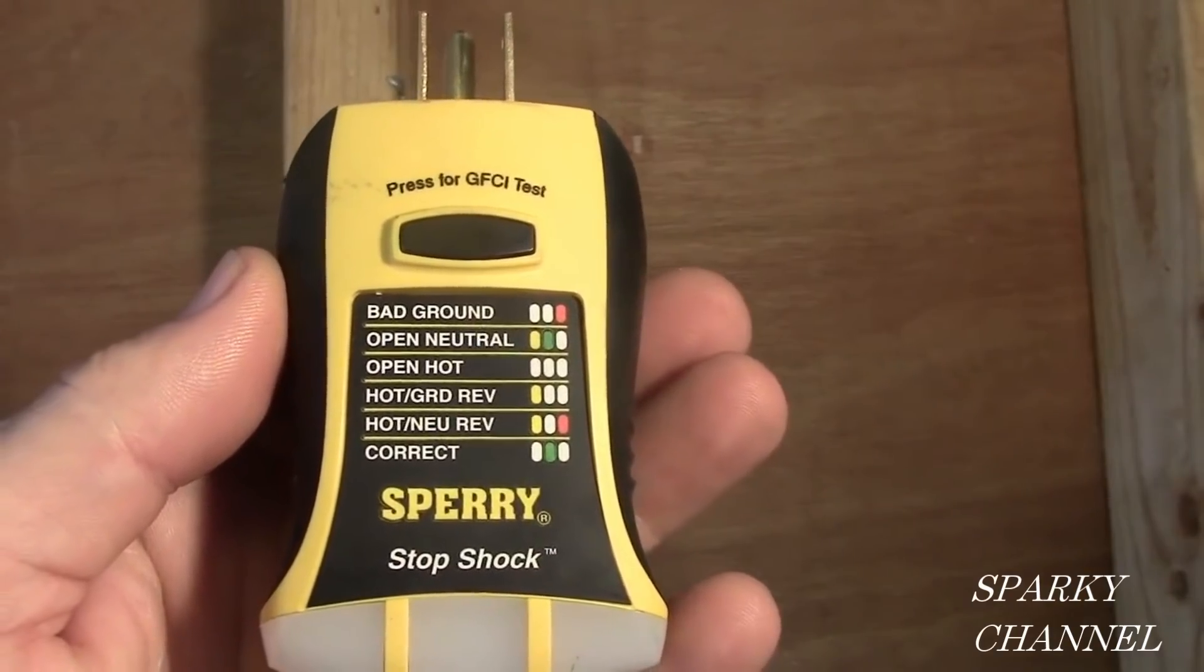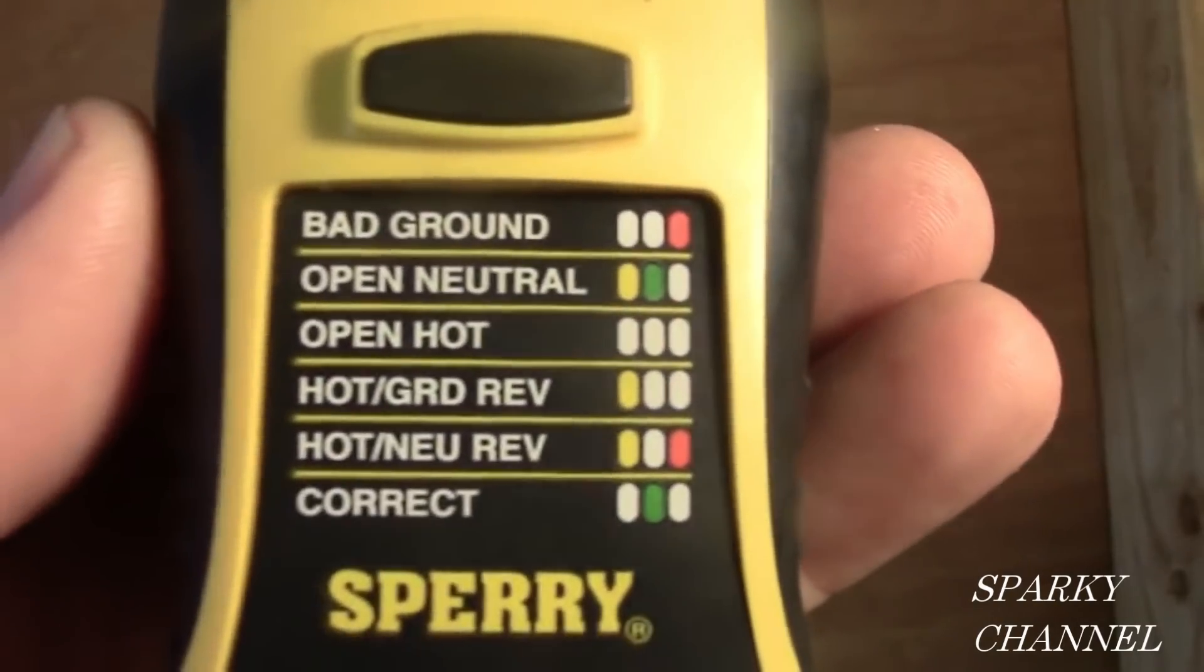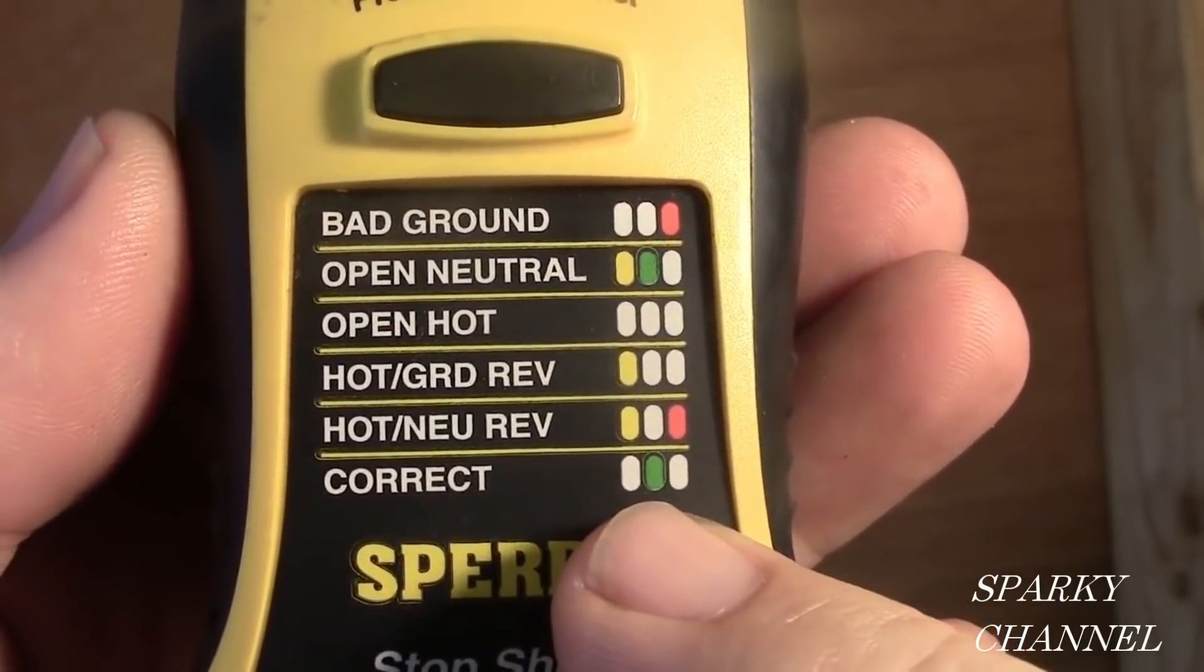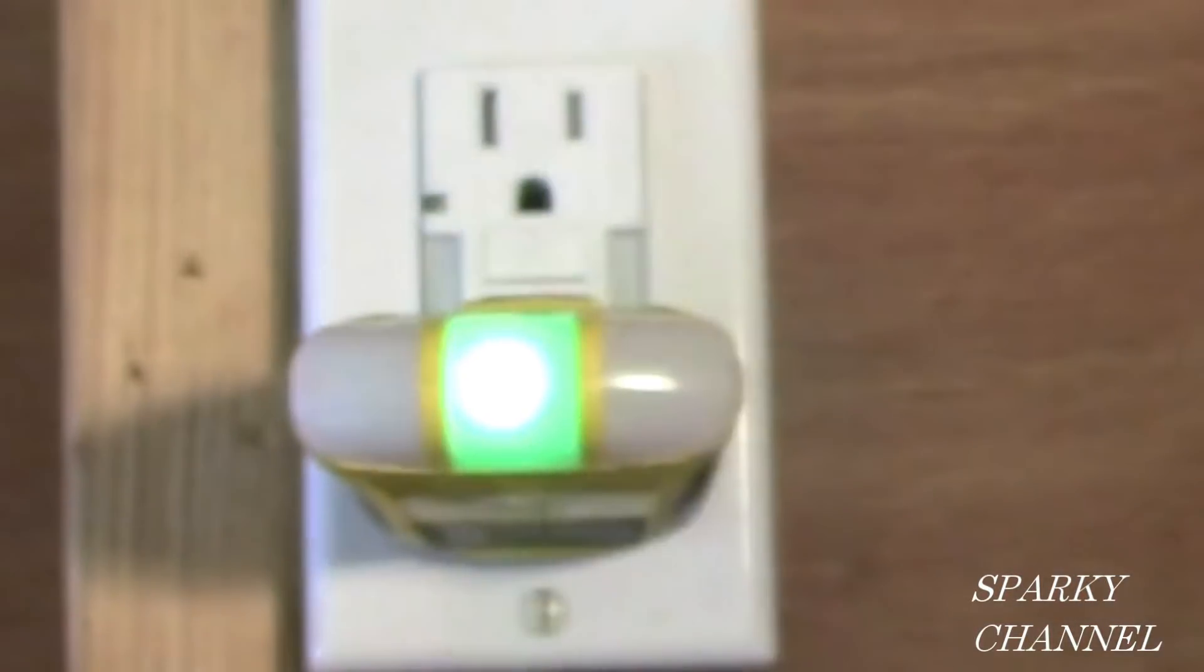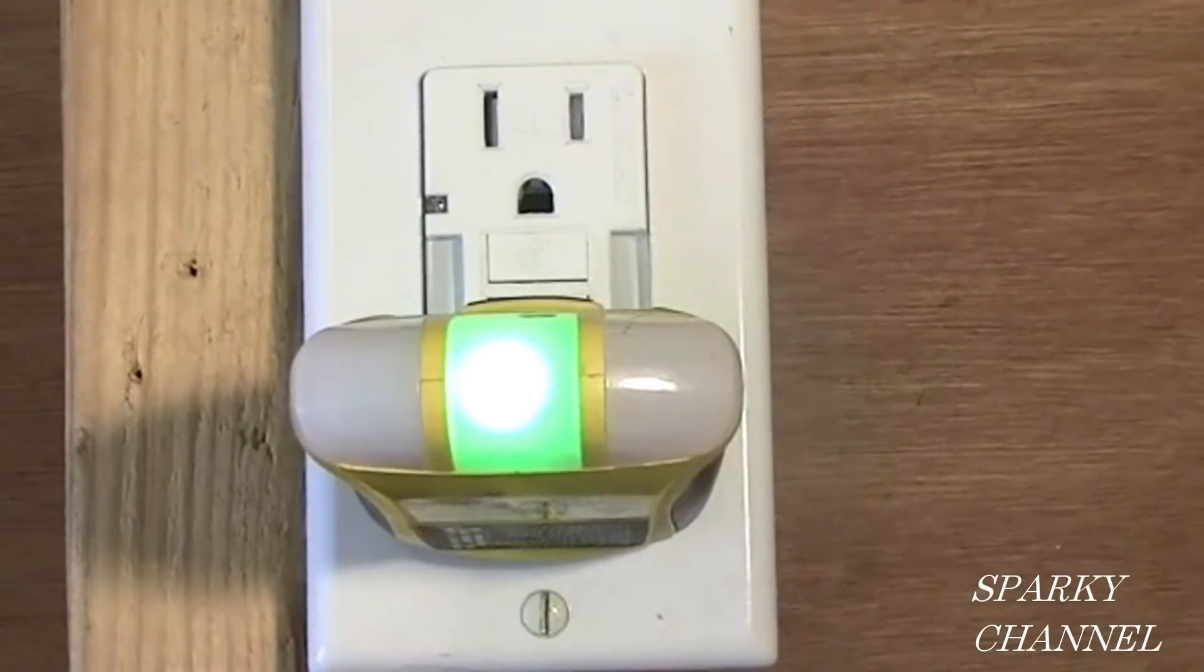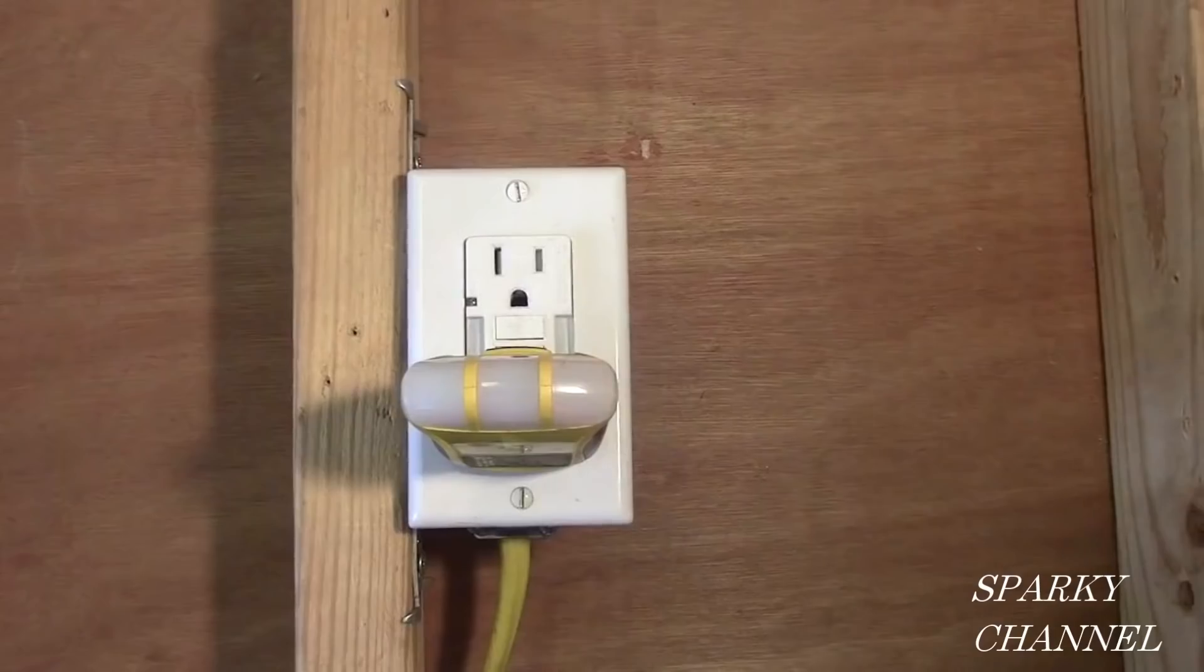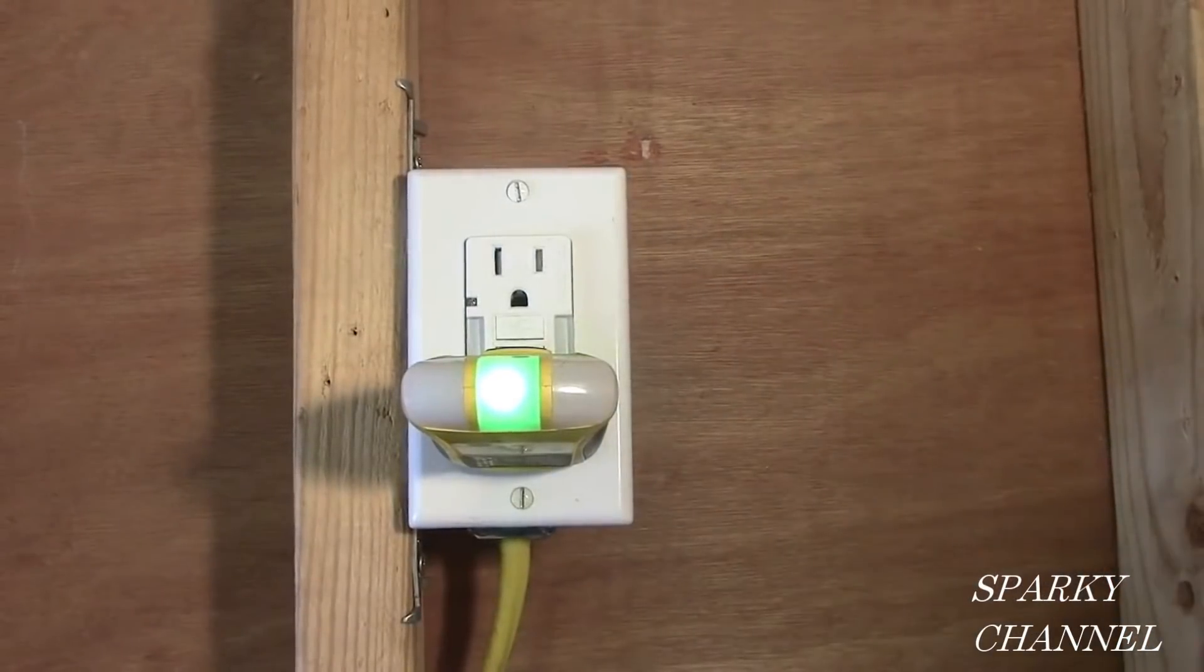This is my Sperry Stop Shock GFCI tester. Notice that right here, correct is represented by one green light right in the middle. So we'll go ahead and plug it in. And there it is - that's correct wiring. And now I'm going to press the button I showed you. There, that worked great. Now press the reset button, and we're back to one green light.